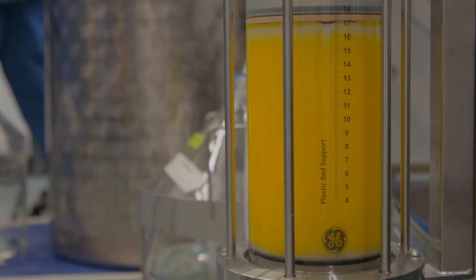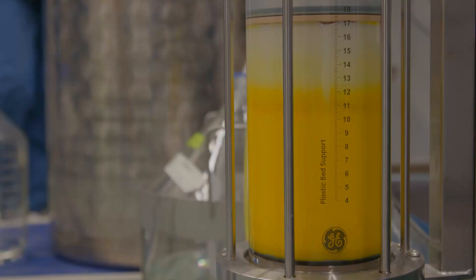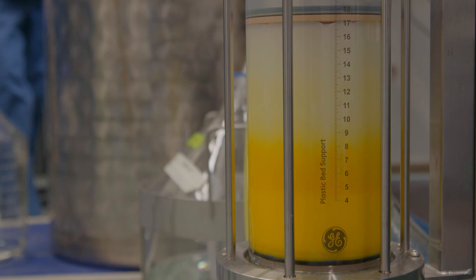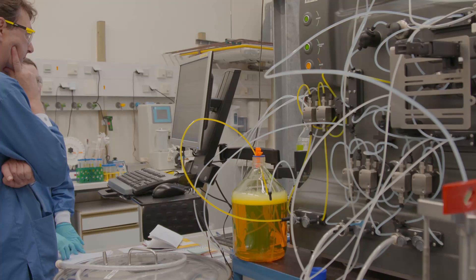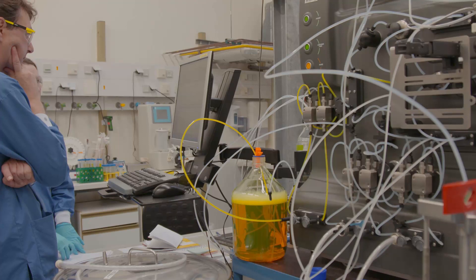The eluate from the anion exchanger is next processed on a column based on hydrophobic interactions. In such a process, high binding is achieved by addition of large quantities of cosmetropic salt. For desorption, the salt concentration is reduced. Typically, during the desorption process, several fractions are collected and analysed for purity.